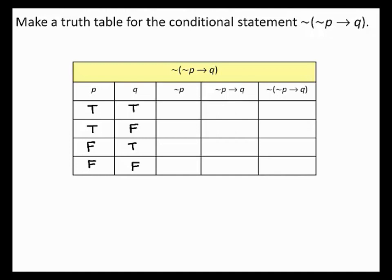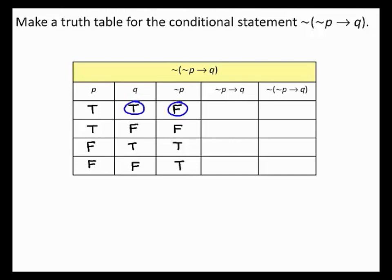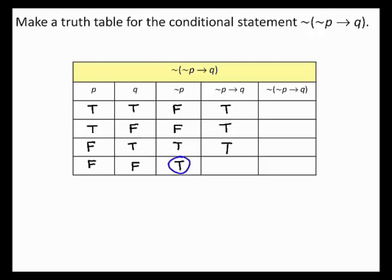Determine the value of not P: where P is true, not P is false, and where P is false, not P is true. For (not P implies Q), this conditional is only false when a true hypothesis produces a false conclusion — when not P is true and Q is false. Row 1: not P is false, Q is true, so (not P → Q) is true. Row 2: not P is false, Q is false, so true. Row 3: not P is true, Q is true, so true. Row 4: not P is true, Q is false, so false.